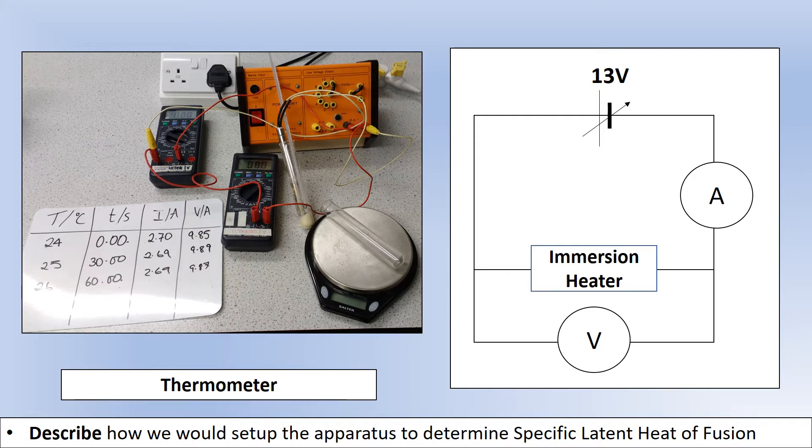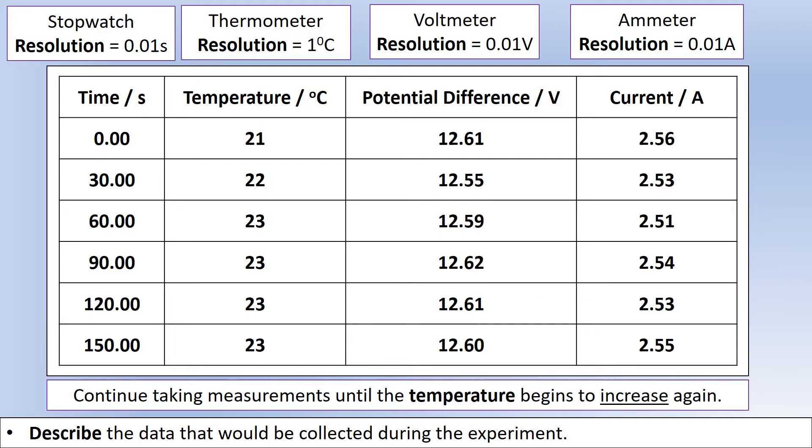Let's have a look at the results that you would collect. I took measurements every 30 seconds. So I've got a measurement of temperature, and I've got potential difference and current at each of those temperatures. The section we're going to be interested in is the section for which the temperature remains constant. You can see it's reached 23 degrees and stayed at 23 degrees. You would keep collecting data on beyond 150 seconds. This is just for example purposes.